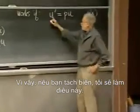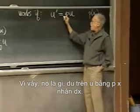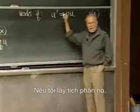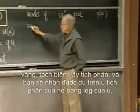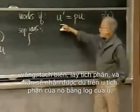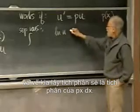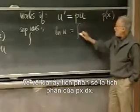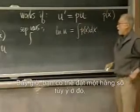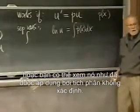So, if you separate variables, I'm going to do this: du over u equals p of x times dx. If I integrate that — separate variables, integrate — you're going to get du over u integrates to be the log of u, and the other side integrates to be the integral of p of x dx. You can put an arbitrary constant there, or think of it as already implied by the indefinite integral.